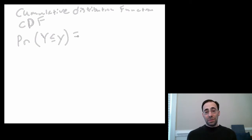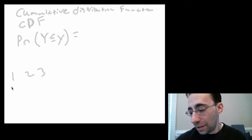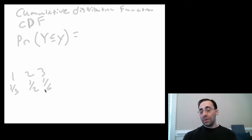So for instance, if we had three possible things happening, if we had values one, two, or three, and the chances were one-third, one-half, and one-sixth, well, the chance of being less than or equal to one is one-third.